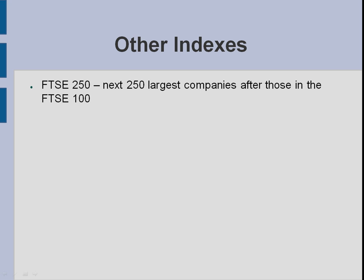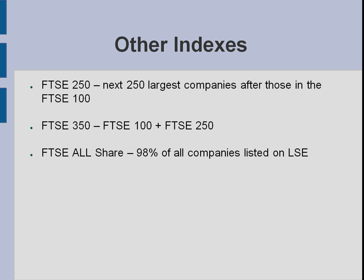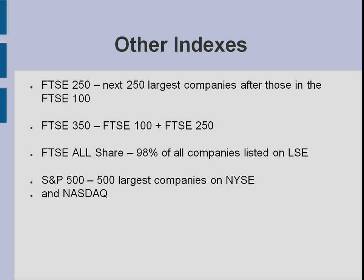There are also some other indexes worth knowing about. The FTSE 250 is exactly the same concept as the FTSE 100, but it's the next 250 largest companies after those in the FTSE 100. The FTSE 350 is just the FTSE 100 plus all of the FTSE 250 companies combined. The All Share is pretty much everything — 98% of all companies listed on the London Stock Exchange. You have the Fledgling Index, which covers companies outside the All Share. And in America, you've got the S&P 500 and the NASDAQ, which is another index — usually referred to as the NASDAQ 100.